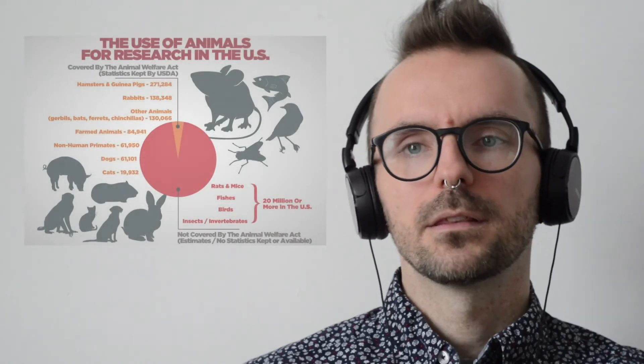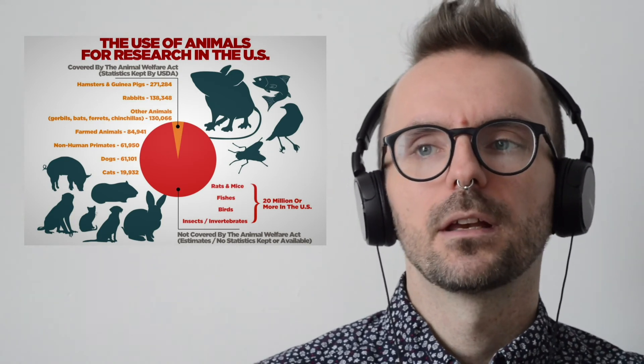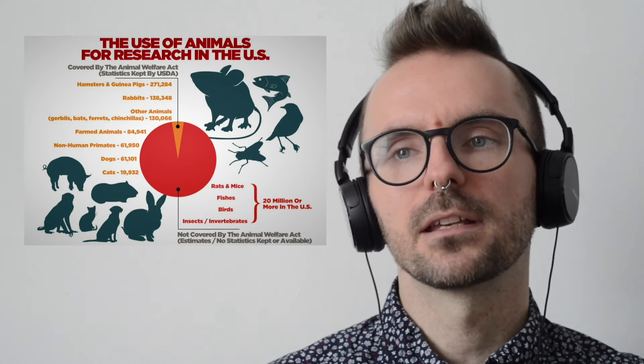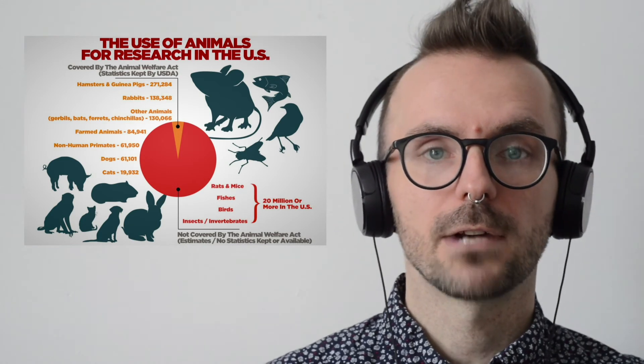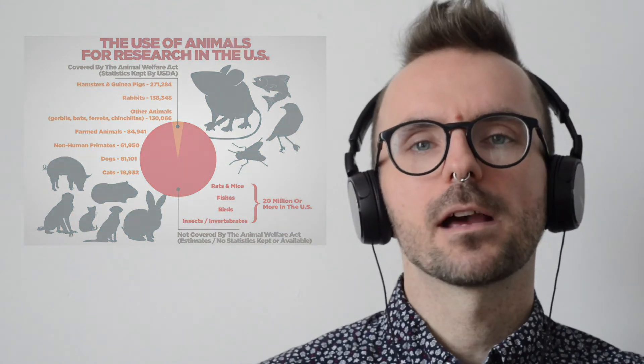The Animal Welfare Act only includes large animals like primates, cats, dogs, and other medium-sized mammals. Meanwhile, the vast majority of animals actually used in laboratory experiments — birds, rats, mice, and fish — do not legally need to be counted, so we have to estimate how many are used each year. Just recently, a study was published extrapolating that about 111.5 million of these hidden animals per year are used in experiments in the US annually. That's a staggering number of animals who not only aren't counted, but also have no legal protections — scientists can pretty much do whatever they want with them, and their lives don't even have to make it to a spreadsheet.